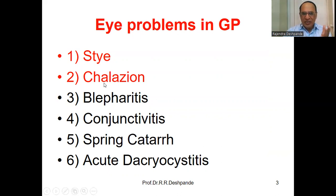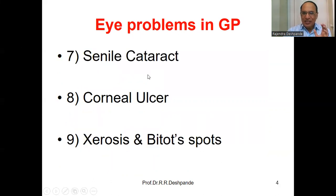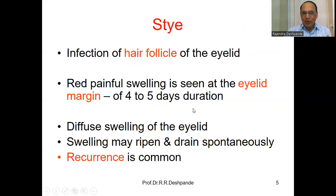We are discussing many eye problems in general practice — for example, Stye, Chalazion, Blepharitis, Conjunctivitis, Spring Catarrh, and Acute Dacryocystitis. But today in this video, there will be a discussion on Stye — in Marathi it is called Ranjanwadi — and also on Chalazion. We will discuss further in another video: Senile Cataract, Corneal Ulcer, Xerosis, and Bitot's Spots.